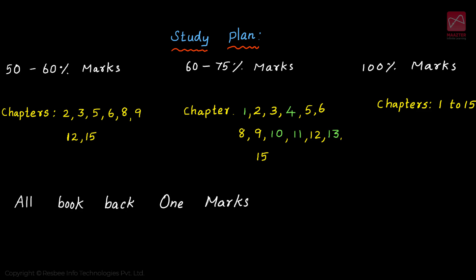In this video, we will look at a study plan and golden questions for 11th standard chemistry. Students are divided into three categories: below average, average, and top students. Each category should choose different chapters accordingly.